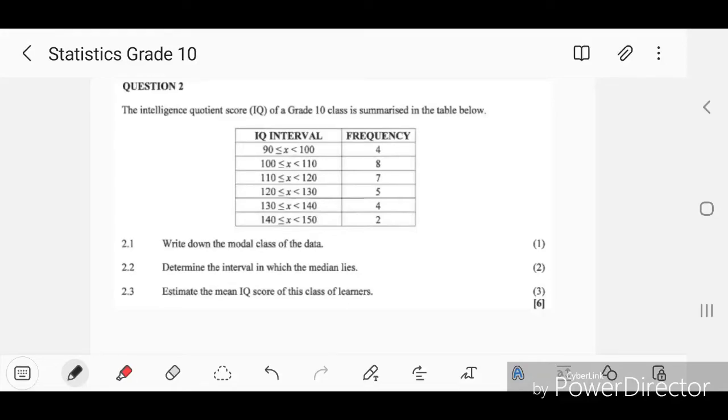Okay guys, so I'm having this other problem for statistics. This one is for grouped data. The intelligence quotient score (IQ) of a Grade 10 class is summarized in the table below. For example, the IQ interval between 90 and 100 has four learners, and between 100 and 110 there are eight learners. Now we're going to be answering questions based on this kind of problem.